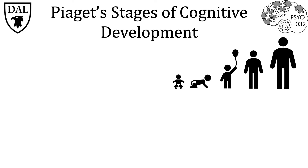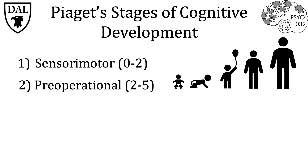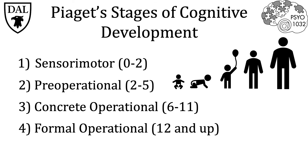He came up with four distinct phases of cognitive development from birth through adolescence: first, the sensorimotor stage from birth to about two years old; next, the pre-operational stage from about two to five years old; then the concrete operational stage from six to eleven; and finally the formal operational stage from ages twelve and up.